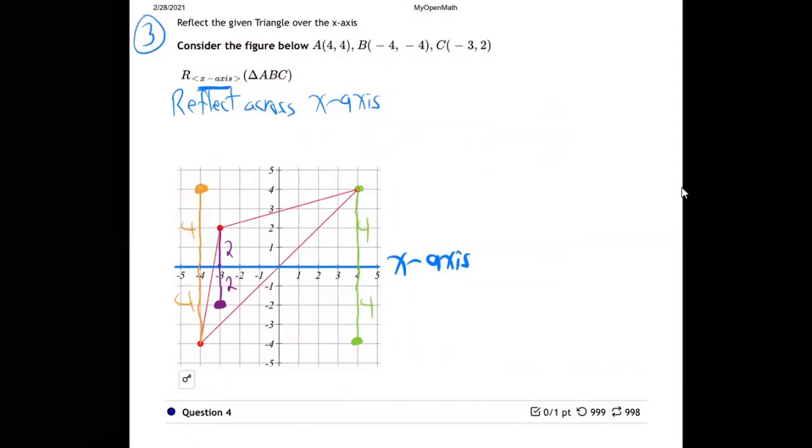With a different color. Okay, so I'm going to connect the dots now. Connect this dot to this dot to this dot to that. There's the new triangle.